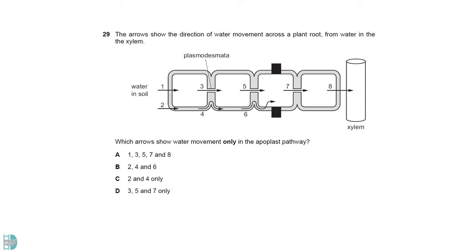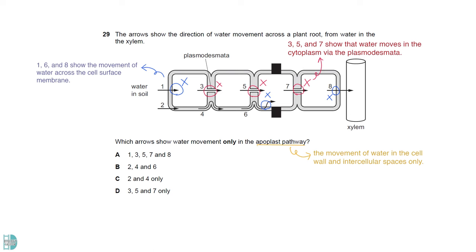The apoplast pathway is the movement of water in the cell wall and intercellular spaces only. 1, 6 and 8 show the movement of water across the cell surface membrane. 3, 5 and 7 show the water moves in the cytoplasm via the plasmodesmata. So only 2 and 4 are correct.